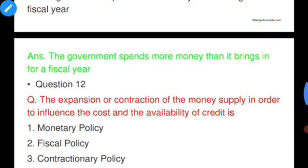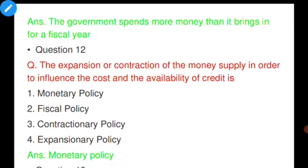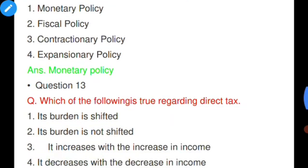Question number twelve: The expansion or contraction of the money supply in order to influence the cost and availability of credit is — monetary policy, fiscal policy, contractionary policy, or expansionary policy. Option A is correct — monetary policy. The expansion and contraction of money supply, which is in the hands of the central bank, is called monetary policy.